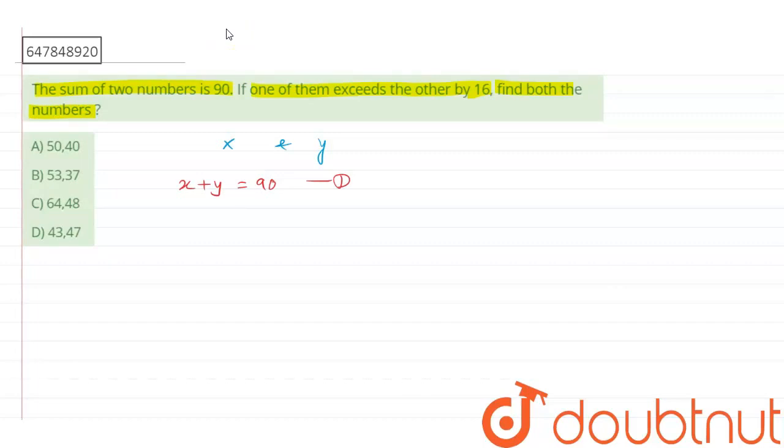One of them exceeds the other by 16. Suppose we assume that x is equal to y plus 16, right? So x exceeds y by 16. So this is the equation that we have given.